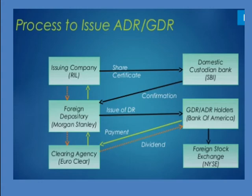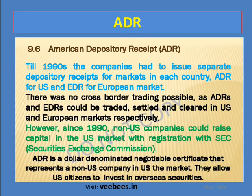The second type of depository receipt is the ADR — American Depository Receipt — which is similar to GDR. The key difference is that ADR is a dollar-denominated negotiable certificate that represents a non-US company in the US market.